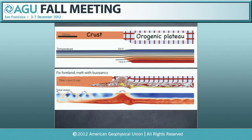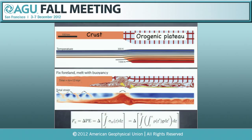The point of that experiment is to show that buoyancy forces related to lateral gradients in potential energy on their own can drive lithospheric deformation. The physics is relatively simple — what drives the deformation is just the gravitational force, which corresponds to the difference in vertical integration of the lithostatic profile along the plateau column and the foreland column.